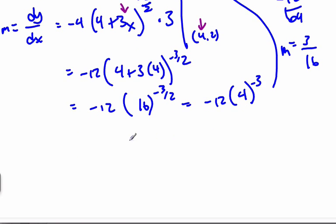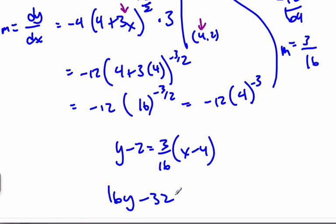So, now taking that slope, I know the point was (4, 2). I plug it into this equation here: 3 over 16, x minus 4. And so, 16y minus 32 is equal to 3x minus 12.